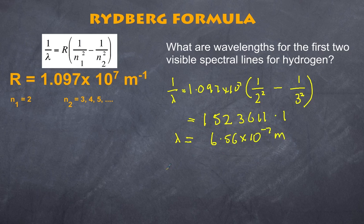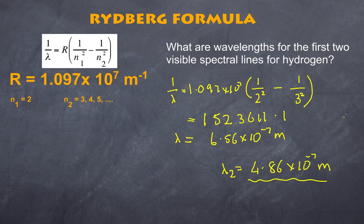If, of course, we do the same thing for the second one, wavelength 2, if you do the mathematics, you're going to get 4.86 times 10 to the power of negative 7 meters. So, there you have it.